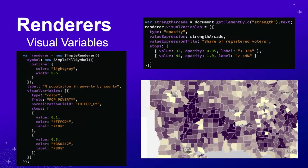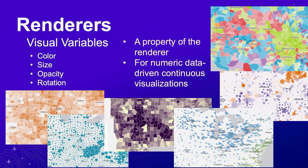Visual variables work with your renderer - color, size, opacity, rotation. That's what they teach you in cartography school - these are your visual variables you can apply to the map. It's about letting data drive how color, size, opacity, and rotation are applied. You'll basically always start with a renderer: a simple renderer, then maybe add a color visual variable, or color and size. Or you can start with a unique value renderer and add a size visual variable - so color shows you what it is, and the size shows you how much is there.